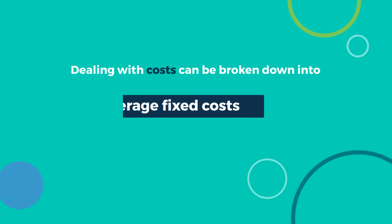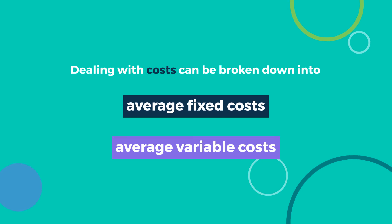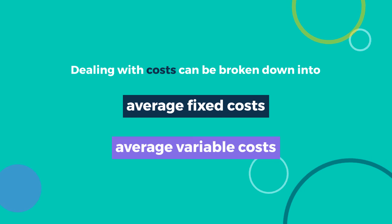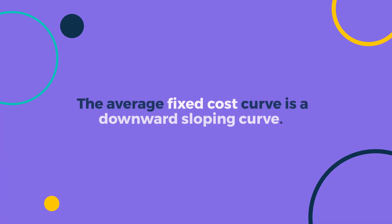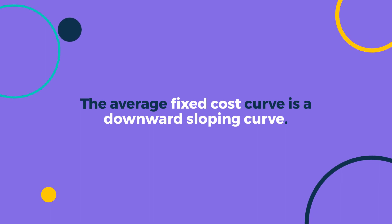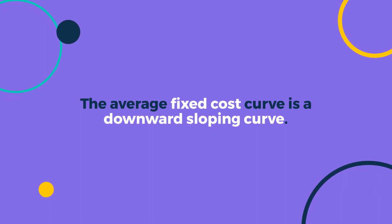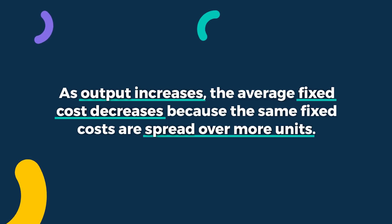Dealing with costs can be broken down into average fixed costs and average variable costs. The average fixed cost curve is a downward sloping curve. As output increases, the average fixed cost decreases because the same fixed costs are spread over more units.